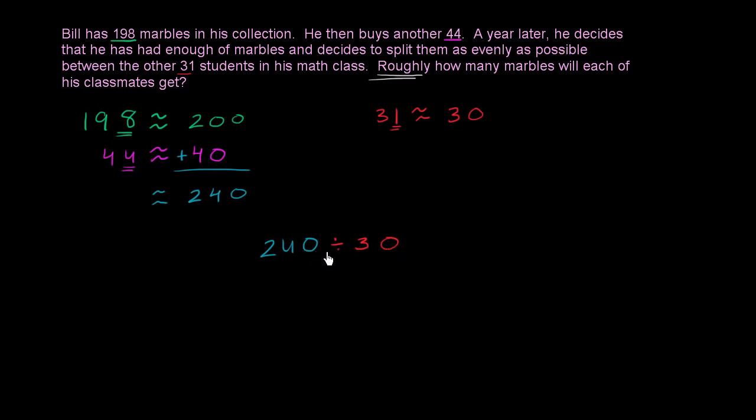Roughly 240 marbles divided by 30 folks. Well, what's 240 divided by 30? Well, if we say that this is equal to the marbles per student, so let's say that this is m, m for marbles per student, this is another way of saying that m times 30 is equal to 240.